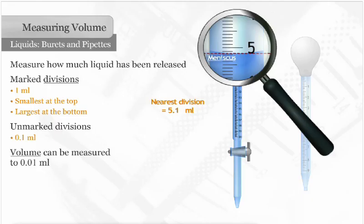The bottom of the meniscus is almost to the second division, so it is estimated to be 0.08 milliliters. The volume of liquid released is 5 and 18 hundredths milliliters, which has three significant figures.